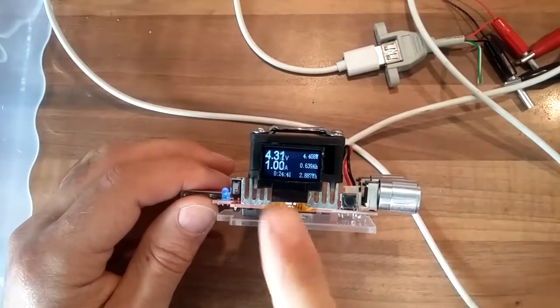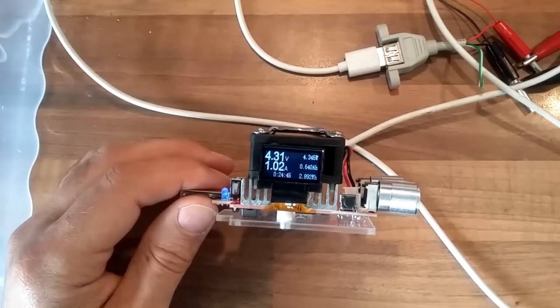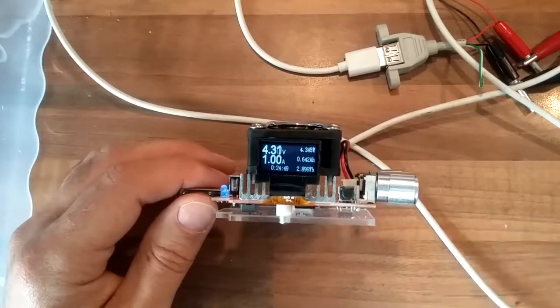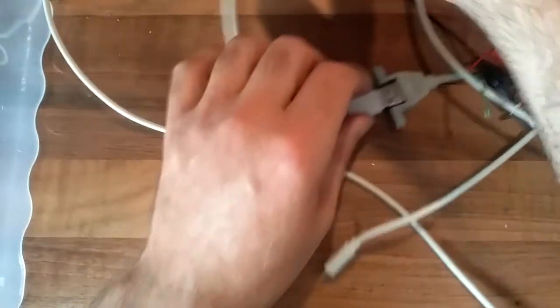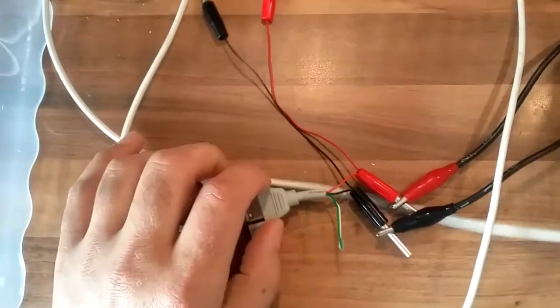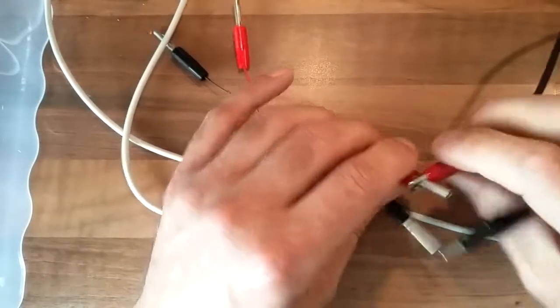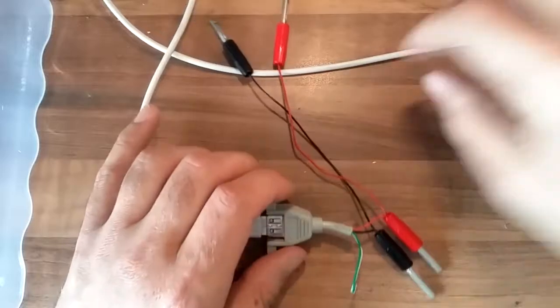0.68 volts at 1 amp—R equals V over I—0.68 volts divided by 1 amp must be 0.68 ohms. So let's see what that actually is. I've modified the connector at this end with some nice little banana plugs.